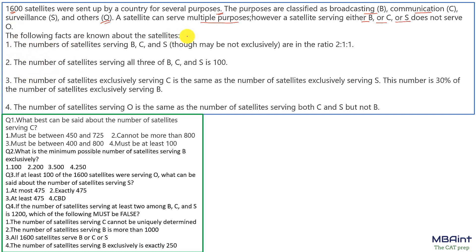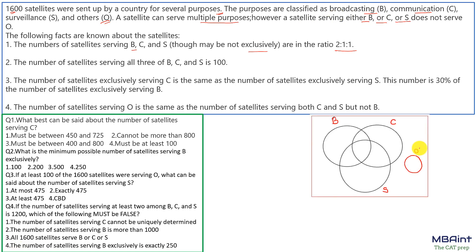The following facts are known about the satellites. The number of satellites serving B, C, and S — though not necessarily exclusively — are in the ratio 2:1:1. So if we make a diagram according to these conditions, total satellites for B would be 2x, for C it would be x, and for S it would also be x, and O would be exclusive, not overlapping with any other satellites. The number of satellites serving all three — B, C, and S — is 100.